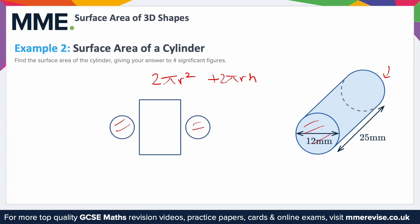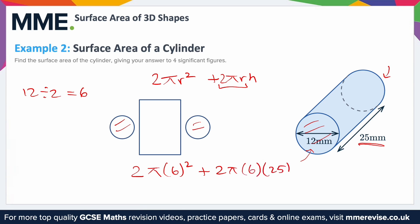2πrh because the width of the rectangle is 2πr — it has to go round the circumference of the circle — and h is the height, in this case 25 millimetres. We need the radius: the radius is half the diameter, and the diameter is 12, so the radius is 6. Substituting everything in: 2 × π × 6² + 2 × π × 6 × 25.